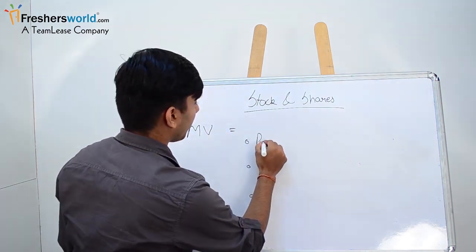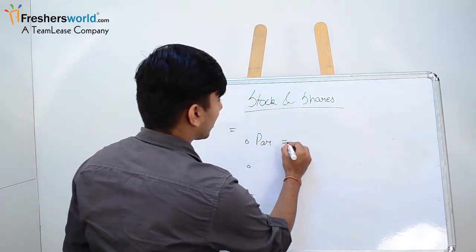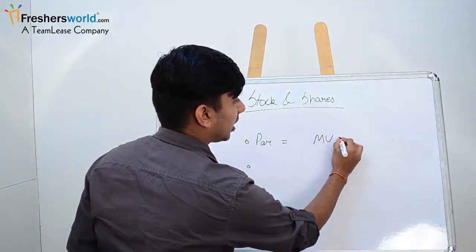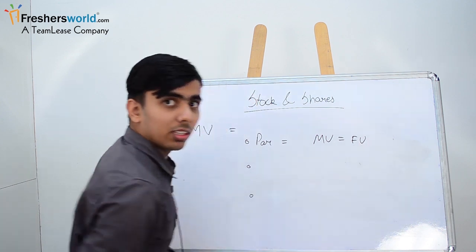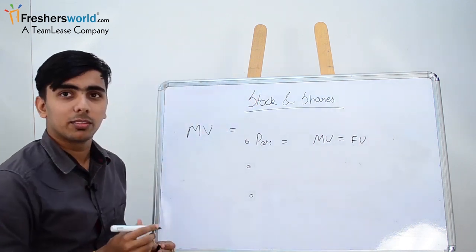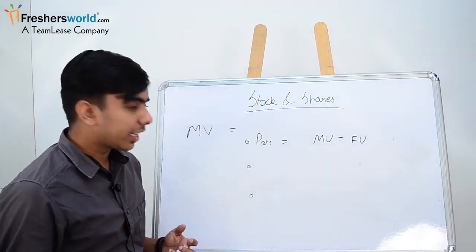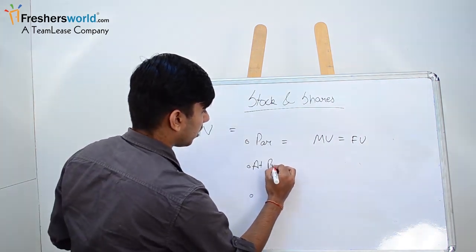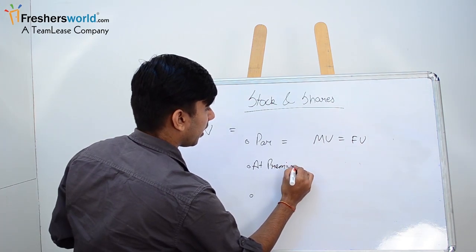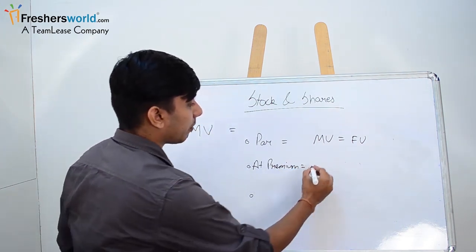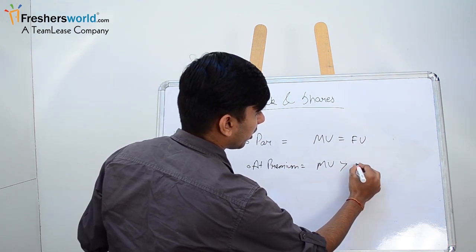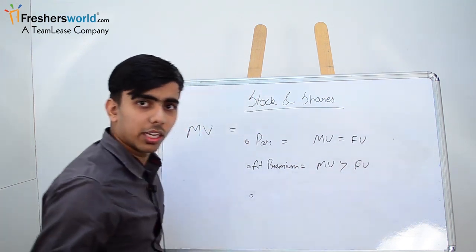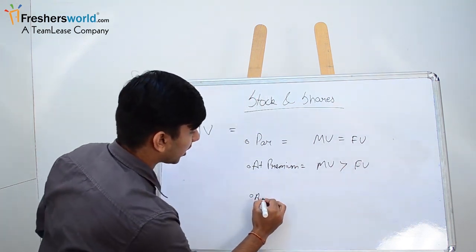First is par, where market value equals face value. Second is at premium, where you can purchase or sell at premium. In this, the market value is greater than your face value. Third is at discount.